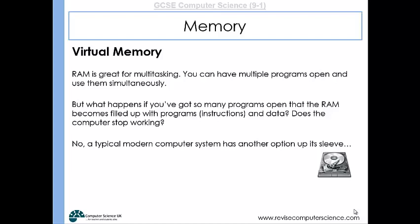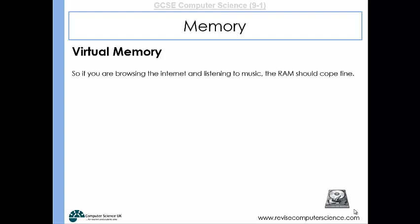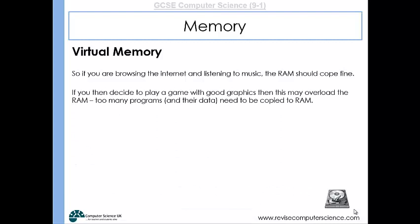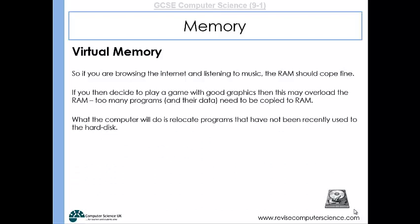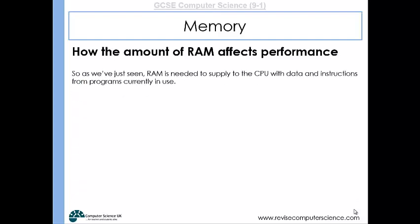Virtual memory allows the computer to continue running, but the problem is the hard drive is very slow compared to RAM at delivering data to the CPU. If the CPU needs to access programs stored in virtual memory, it does so much more slowly, which slows the system down. Programs not recently used get relocated to the hard disk, and that process takes time, but generally speaking it keeps the system running.